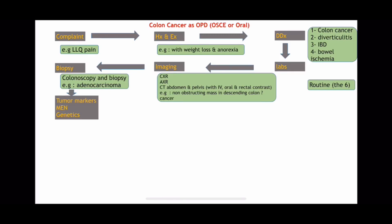Then you need the tumor markers. This algorithm is a standard one for every disease in general surgery, so you delete whatever doesn't apply and complete it. The tumor markers here are CEA, alpha-fetoprotein, and CA-19-9. What's usually mentioned in books is CEA and CA-19-9, but in clinical work oncologists typically request CA-19-9 alongside CEA. Alpha-fetoprotein is relevant if the liver is involved, which it may be.